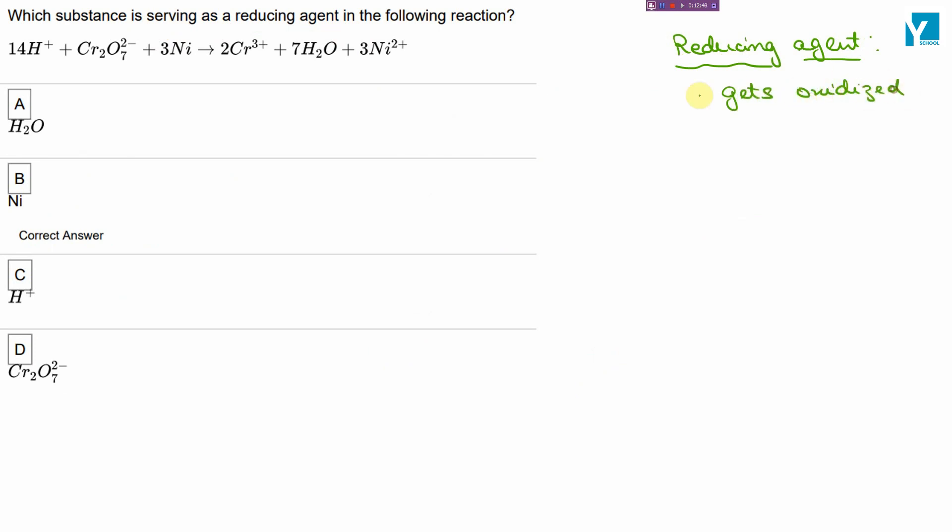You have to identify a species which gets oxidized. Looking at the chromium oxidation state, chromium goes from 6 to 3. The dichromate ion is getting reduced, so this is the oxidizing agent.